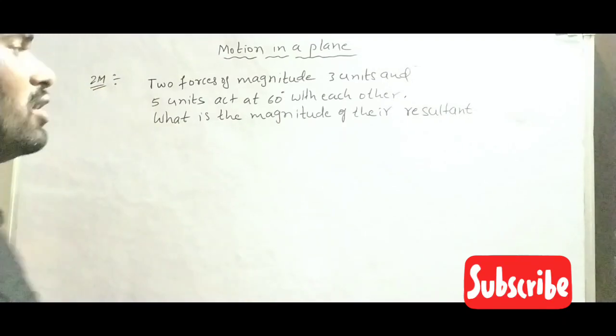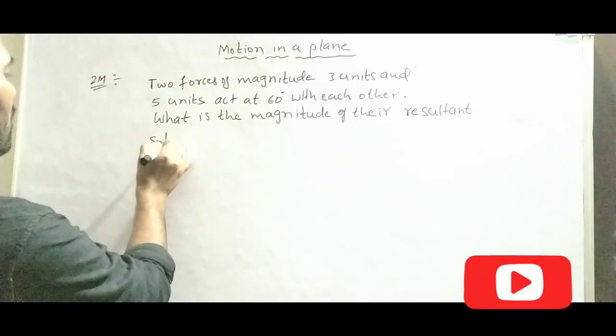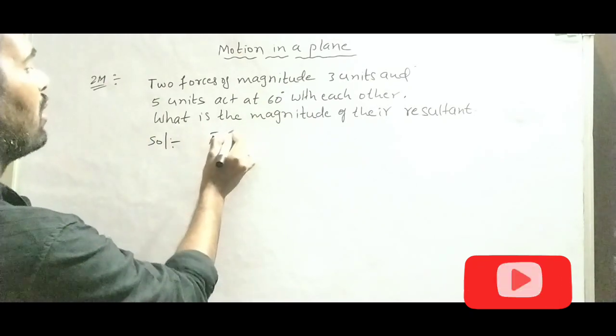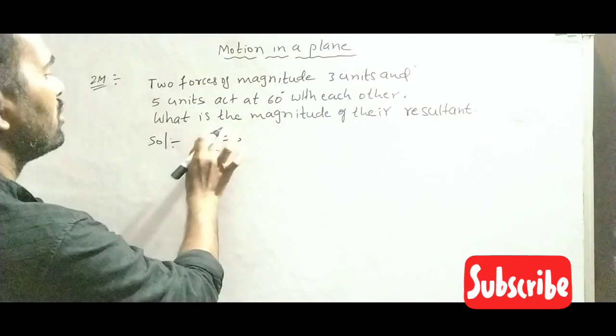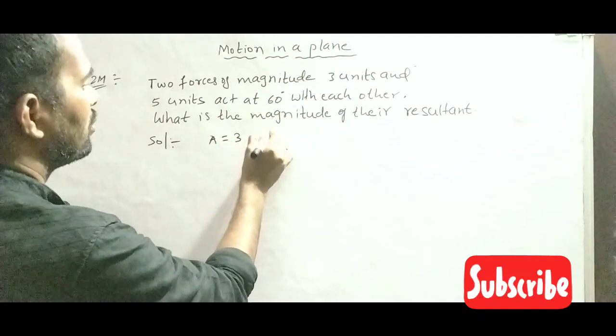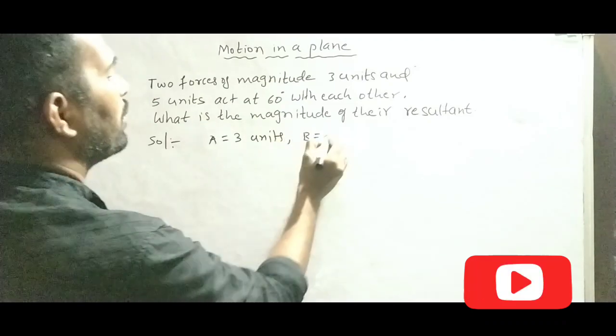What is the magnitude of their resultant vector? So here, two forces, magnitude of A equals 3 units, magnitude of B equals 5 units.